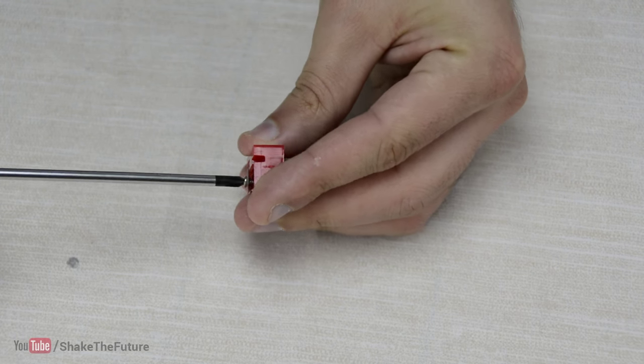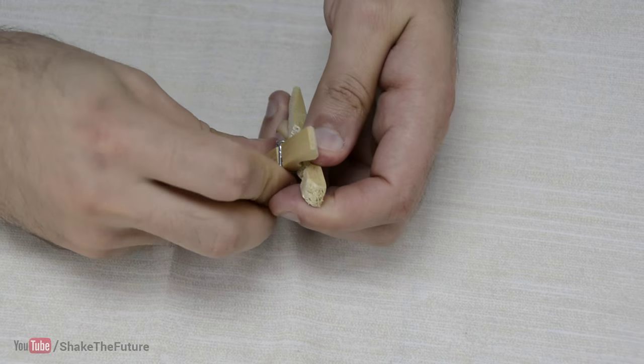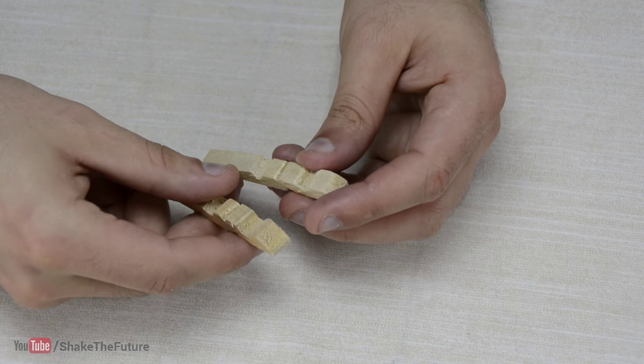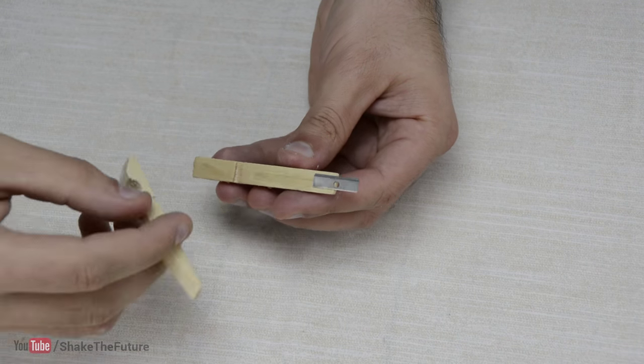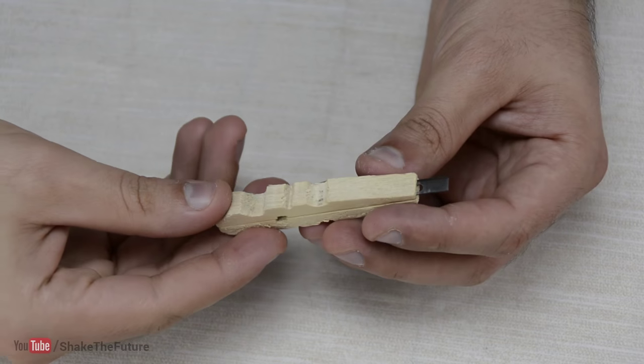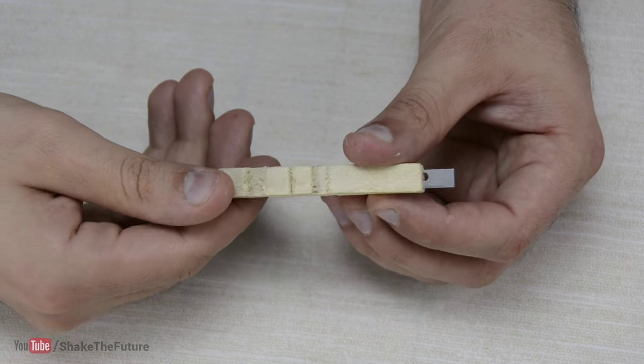I took off the blade from the sharpener and took apart the peg. Then I glued the blade between the wooden pieces. We have made a small stencil knife.